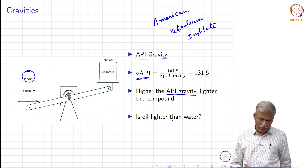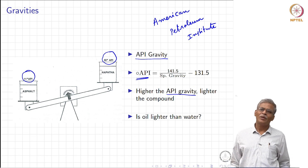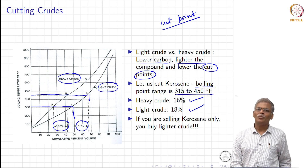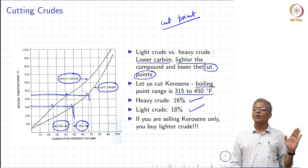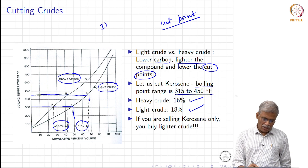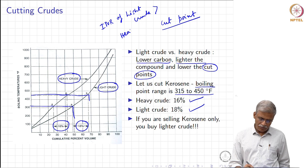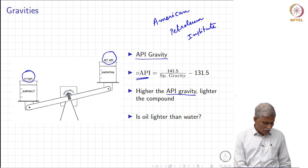If it is asphalt, the API gravity is going to be close to 11. But if it is naphtha, it is going to be close to 50. When it is a heavy crude, it is signified by a low API gravity; when it is a light crude, it is signified by a high API gravity. Depending on the API gravity, the crude oil prices are fixed. You can understand that the price of light crude is much higher than heavy crude because you can get more kerosene from it.